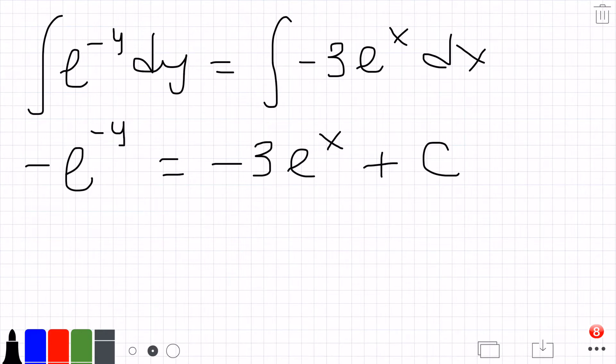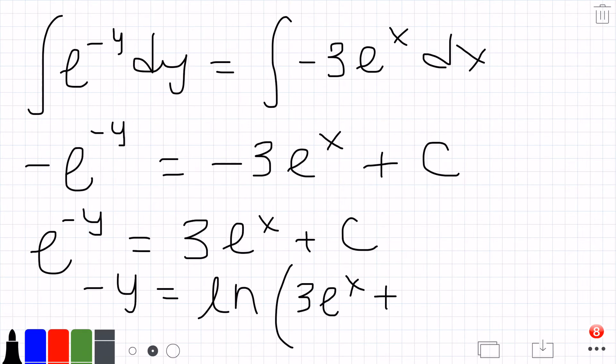Let's divide this negative through: e to the negative y equals 3e to the x plus C. And we take the natural log of both sides and we're left with negative y equals ln of 3e to the x plus C.